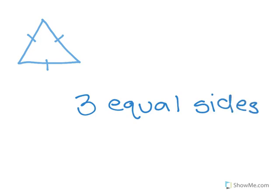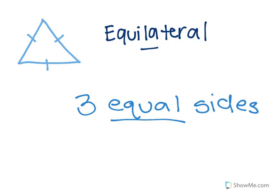since all the sides are equal, it has a name similar to the word equal. Does anyone remember it? You're right, this is an equilateral triangle. Okay, so an equilateral triangle has all equal sides.